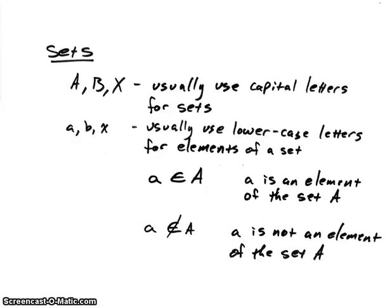Looking at Sets, we'll usually use capital letters to indicate a particular set, for instance the capital letters A, B, or X. For elements that are inside of a set, we will use lowercase letters, examples being lowercase a, b, and x.